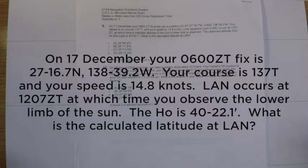On 17 December, your 0600 zone time fix gives you a position of latitude and longitude. Your vessel is on a course of 137 degrees true. Your speed is 14.8 knots.